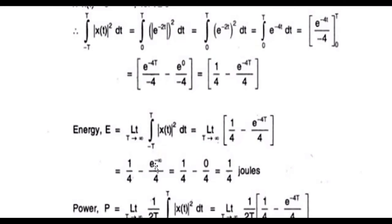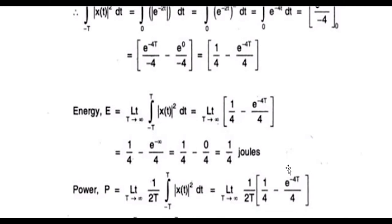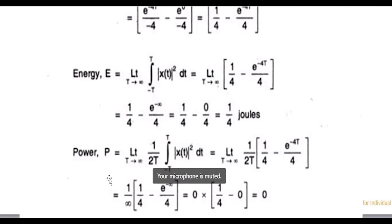Because e to the power of infinity means 1 over e to the power of infinity — as the exponent of e keeps increasing, since it is in the denominator due to the minus infinity, the denominator becomes so large that the whole quantity becomes approximately equal to zero. So e to the power of minus infinity goes to zero.